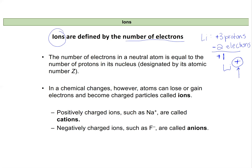Elements can either gain or lose electrons, giving us two different types of ions. If we lose electrons we have fewer electrons than protons, giving us a positively charged ion, which we would call a cation.